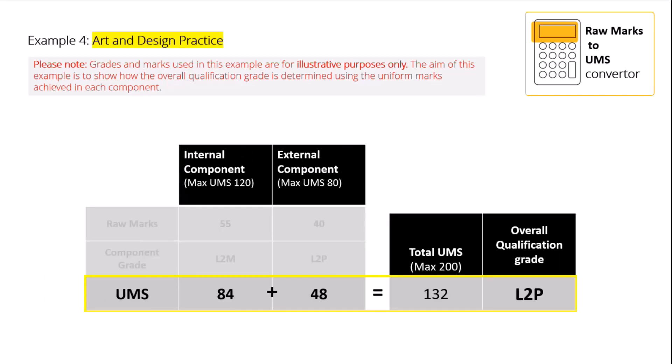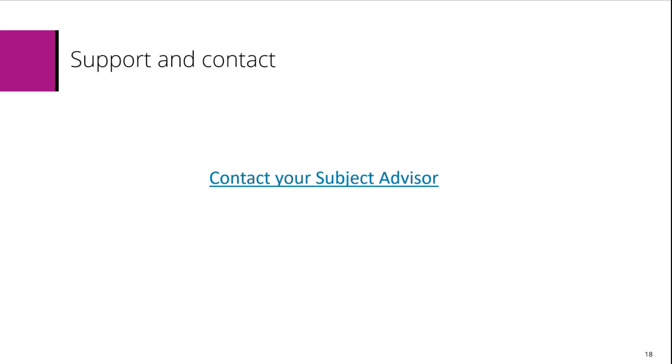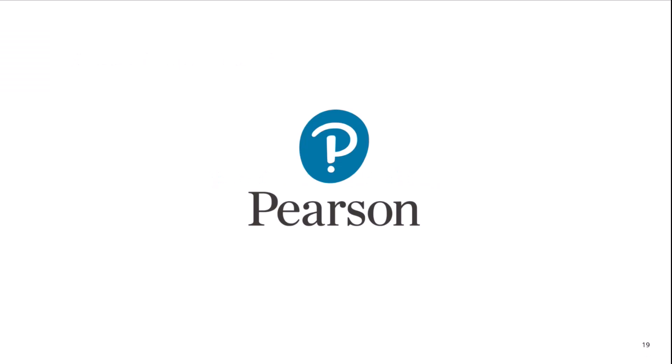This is an Art and Design Practice example, which has two components only, achieving a Level 2 pass overall. Finally, if you wish to discuss anything further, the subject advisors are here to support you with any issues or questions you may have. You can reach individual subject advisor details from the page linked on this slide. Thank you — we hope you found this guidance useful.